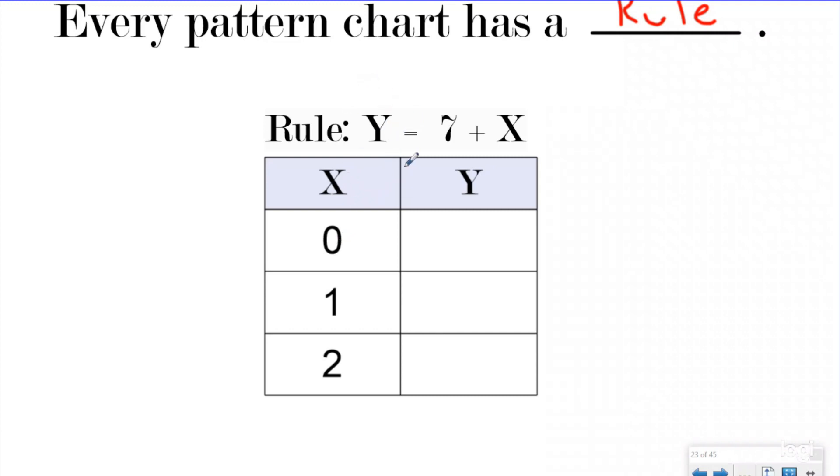When X is zero, if our rule is Y equals seven plus X, then seven plus zero is seven. So if you put a zero in to this rule, you're going to get out a Y that equals seven, right? It's a lot easier than it looks. A lot of people get freaked out by this, but it's actually pretty easy.